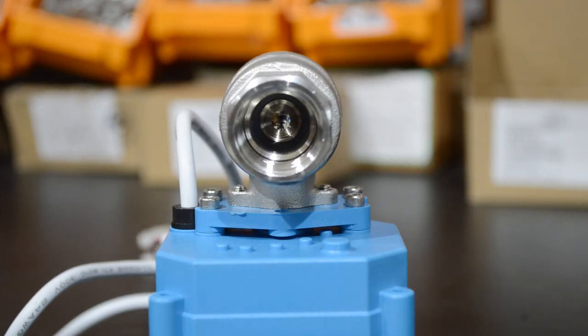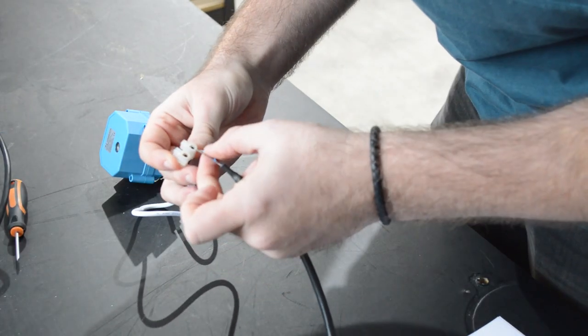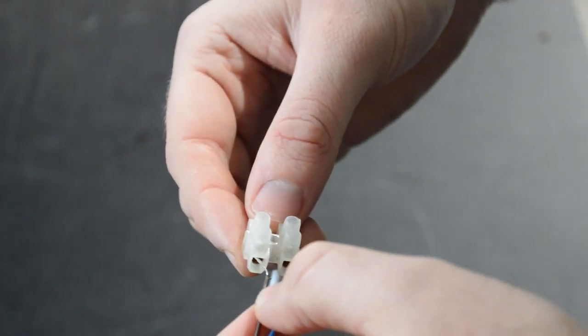Easy to install, the unit eliminates water hammer usually encountered with fast acting solenoid valves. To start, connect the power wires from the valve's actuator to the control panel by matching the pink wire to the brown wire and the black wire to the blue wire.